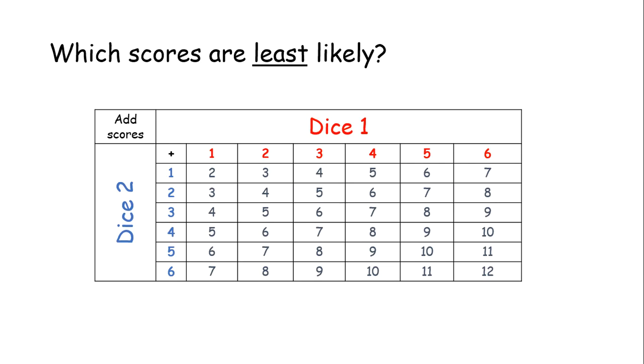Okay, so hopefully, you paused the video and you've worked out that this number and this number are the least likely scores. So, there are two least likely scores. They occur only once. So, that's two and that's 12. So, the probability of scoring two is one possibility out of 36 in total in our table, and the possibility of scoring 12 is one out of 36 in our table as well.